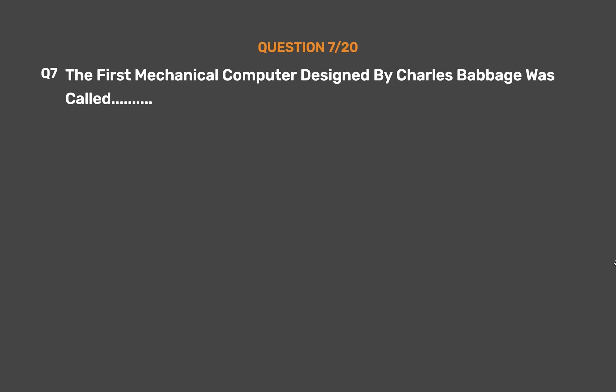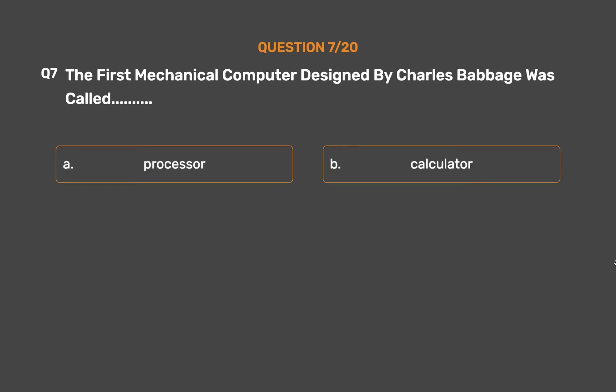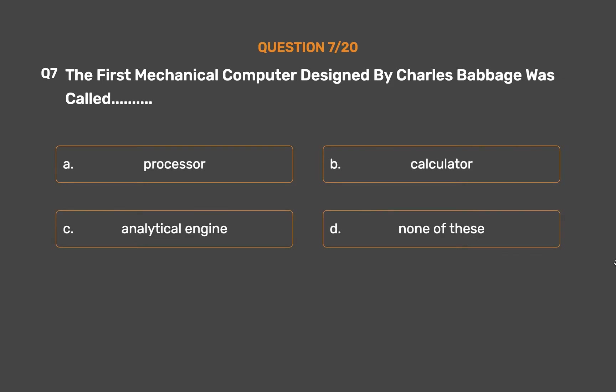Question number 7. The first mechanical computer designed by Charles Babbage was called: Option A: Processor. Option B: Calculator. Option C: Analytical engine. Option D: None of these.